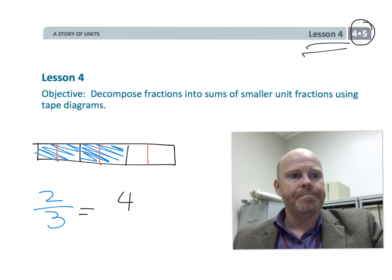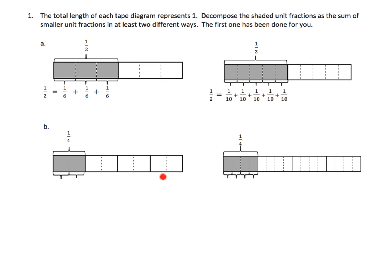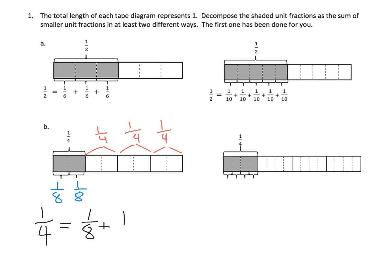So let's get started. We've got this fraction right here and we're told that it's one-fourth. We can see that this is a fourth, and this is a fourth, and this is a fourth, and each fourth has been cut into two pieces. That makes each of those little pieces an eighth. So we can see that one-fourth is equal to one-eighth plus one-eighth.